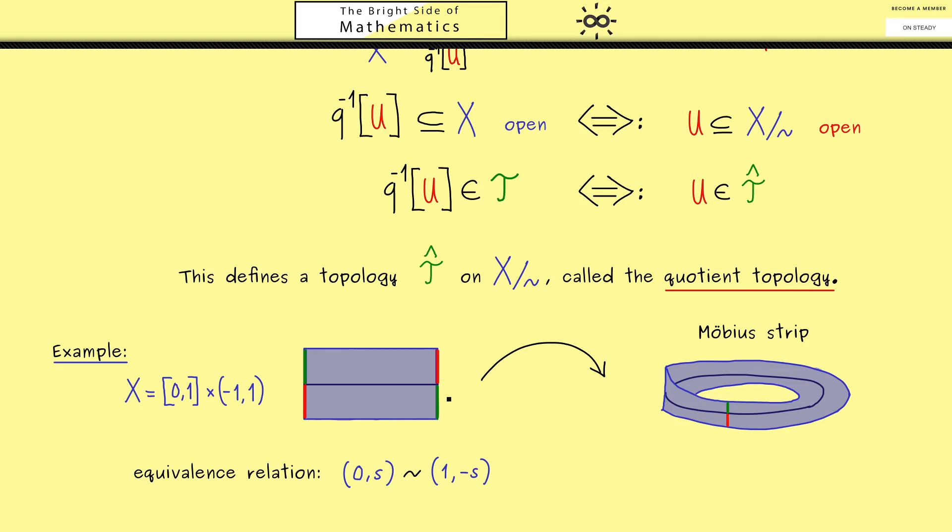So you see the minus sign does exactly what we want. It flips the point from the bottom part to the top and vice versa. Hence this point is identified with this point. And this is exactly what gluing is.